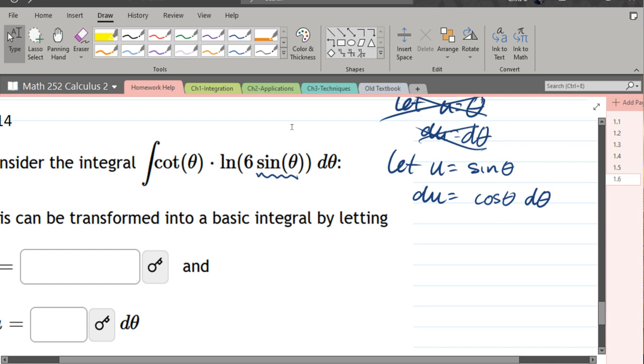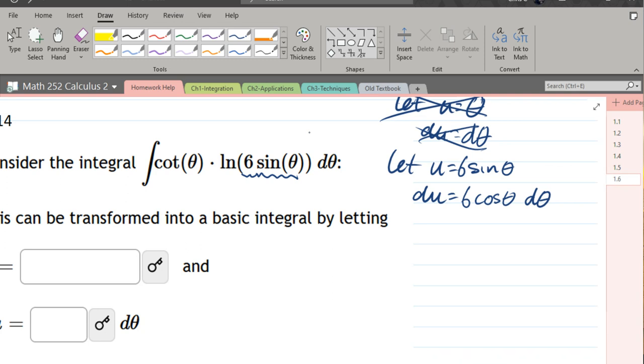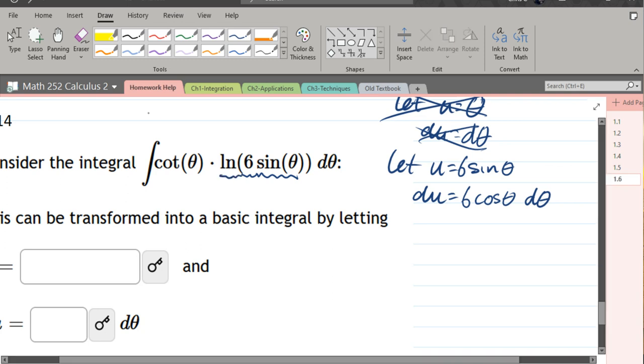So go a little bit bigger. I don't think including the six is actually going to help. It's just going to give us... we still don't have six cos theta d theta. So we go a little bigger. We'll include the natural log. So I'm going to cross out the ones that didn't work. Let u equal ln of six sine theta.